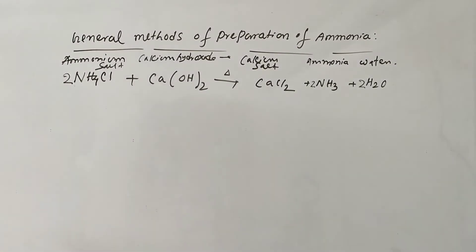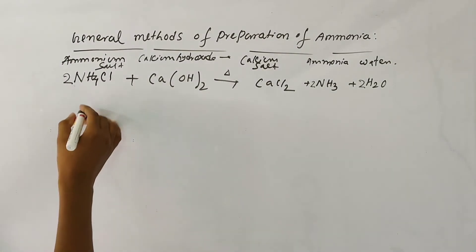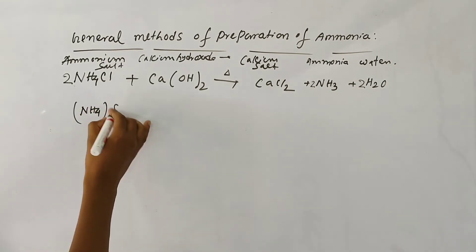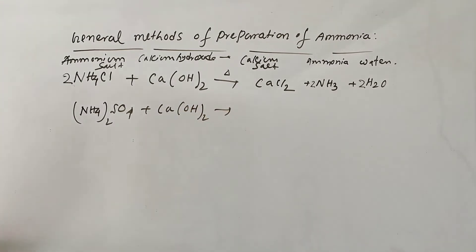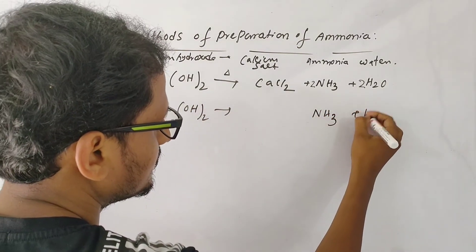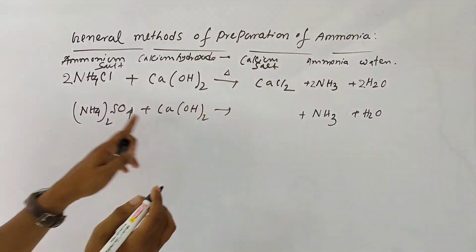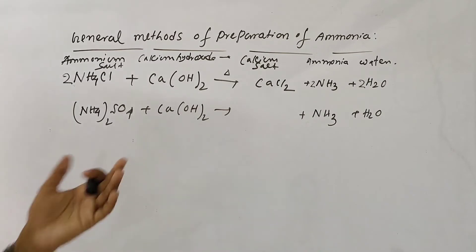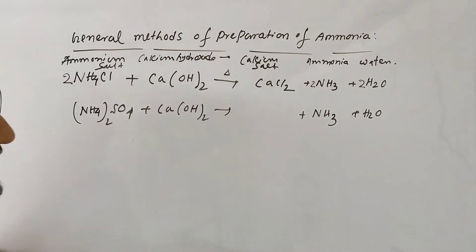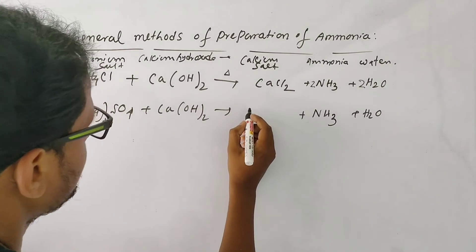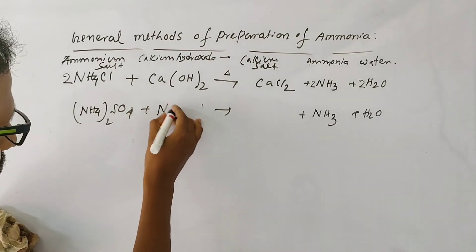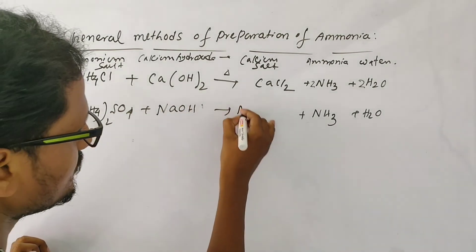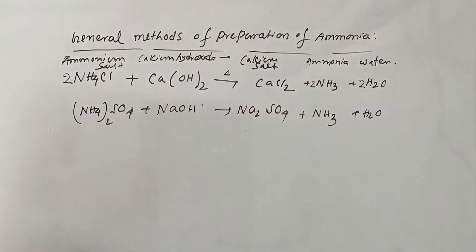Similarly, ammonium sulfate — (NH4)2SO4 — reacted with calcium hydroxide gives ammonia, water, and calcium sulfate. You can also use sodium hydroxide instead of calcium hydroxide; then you get sodium sulfate instead. So different ammonium salts react with hydroxides to produce ammonia.